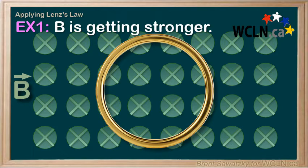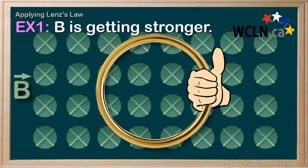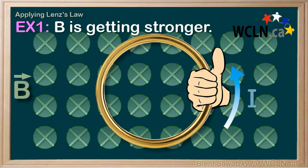So now we just use our right-hand rule in a backward sort of way, curling our fingers so that the induced magnetic field is coming out of the page within the loop. And now we see that our thumb is pointing counterclockwise. And since our thumb represents the current, we know that the induced EMF is in a counterclockwise direction.